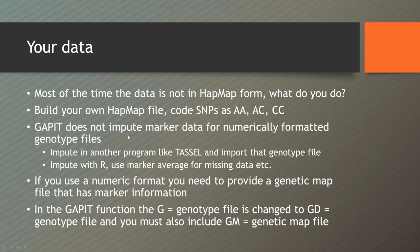Again, caution, GAPIT does not impute marker data from numerically formatted genotype files. So what do you do in that case? You can use another program like TASSEL, FASTPHASE, there's one more out there that people commonly use. I can't remember though. Or you can do the imputation in R. If you have your data in numerical format, you can just take the average of the column and use that for your missing data.